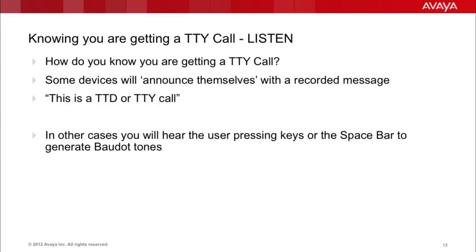So how do you know you're getting a TTY call? Easy — just listen. Some devices will actually announce themselves with a recorded message, such as: 'TDD caller, use TDD.' In other cases, you might hear the user pressing the space bar or other keys that generate Baudot tones. And remember, there's no carrier tone when neither side is transmitting, which is why at some agencies it's their operational practice to probe all silent calls with TTY tones to make sure it's not an incoming TTY-TDD call.